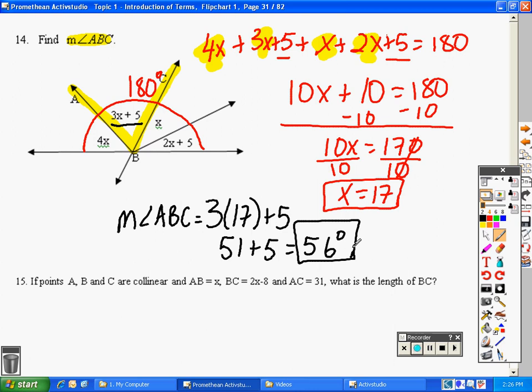Problem number 15 is our last problem. This is a segment addition question, not an angle addition question. So they're telling us points A, B, and C are collinear. Alright, so I need a line. They should tell you that this segment is called segment AC. They didn't tell us that, but we see that we have A, B, so A to B is something, and then B to C is something else. So I'm going to draw it like this.